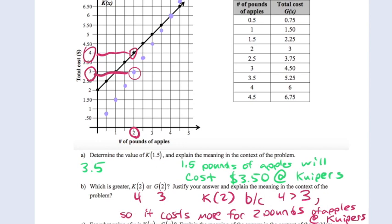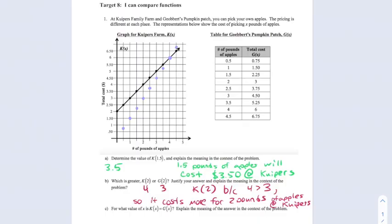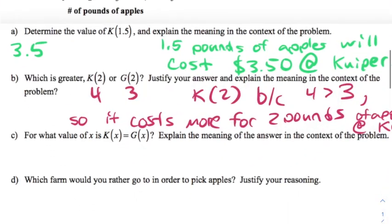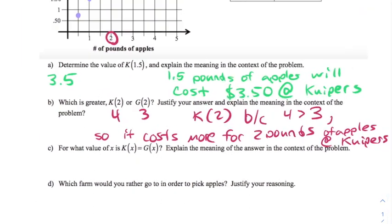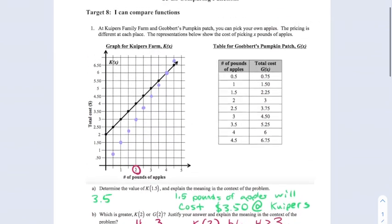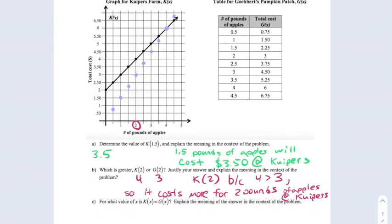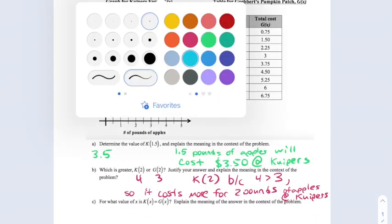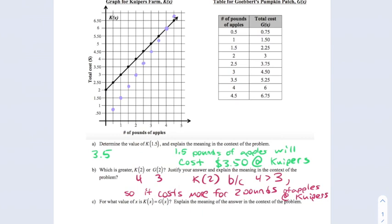The next question says when would k(x) equal g(x), at what x value would k(x) equal g(x)? So what we're saying is when would the outputs be the same for inputs in either function. This is why I really like having the graph with both functions on it. We're looking for a time where these two graphs cross, which would be happening here when x equals 4. They both have a y value of 6.